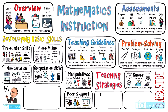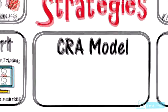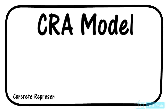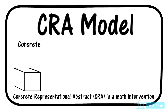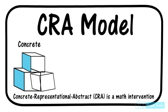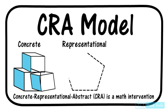Continuing with teaching strategies, we'll explore the CRA model of mathematics teaching. CRA stands for Concrete, Representational, and Abstract — a three-phase model designed for mathematics intervention. Educators begin by teaching the math concept and modeling it with concrete objects that students manipulate with their hands. The next phase is Representational, where the teacher transforms the concrete object into a semi-concrete representation — this may involve creating drawings, filling in circles, or adding marks to a piece of paper.